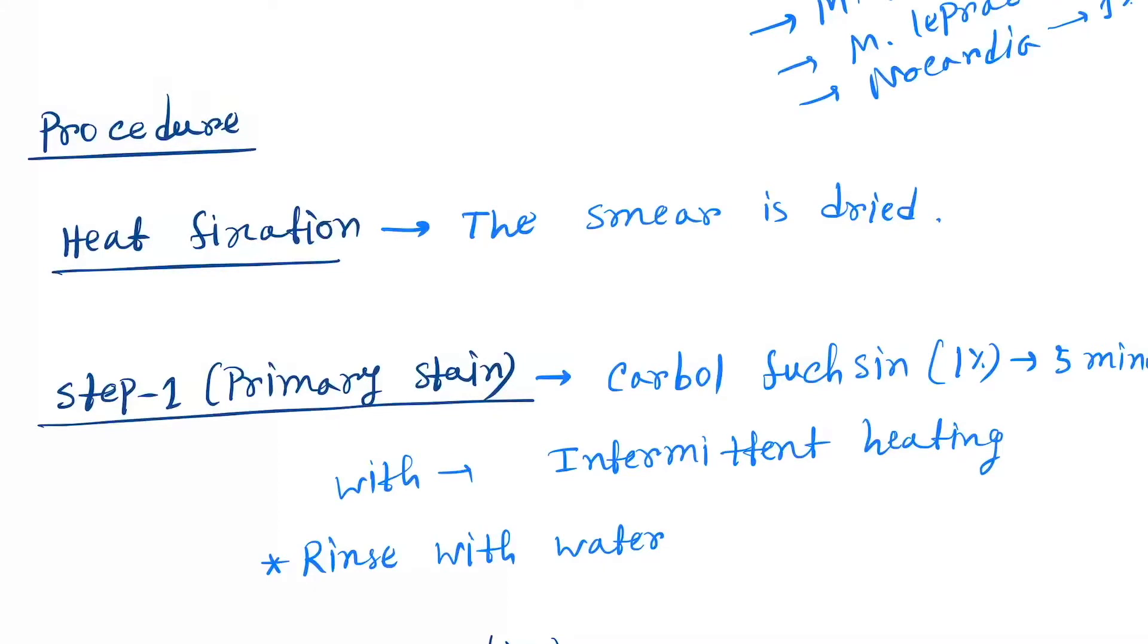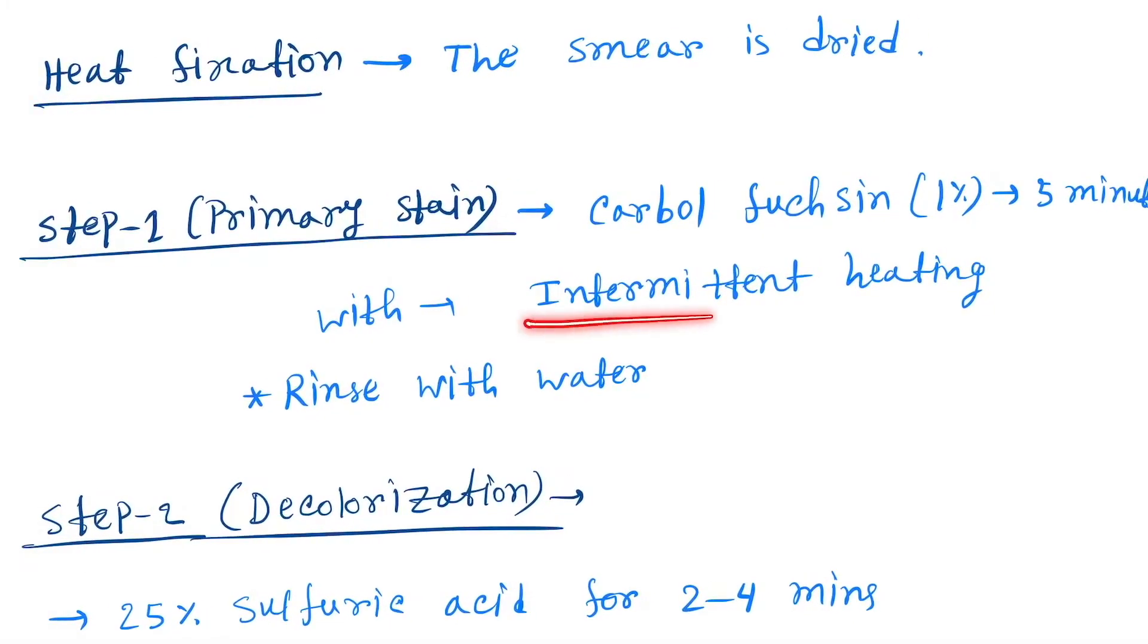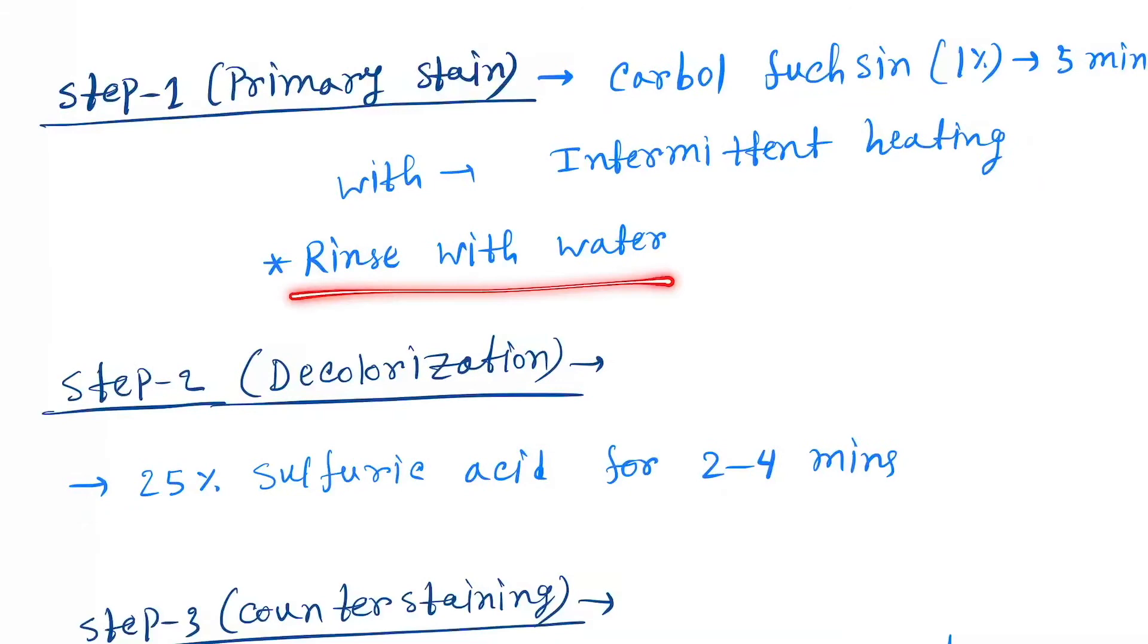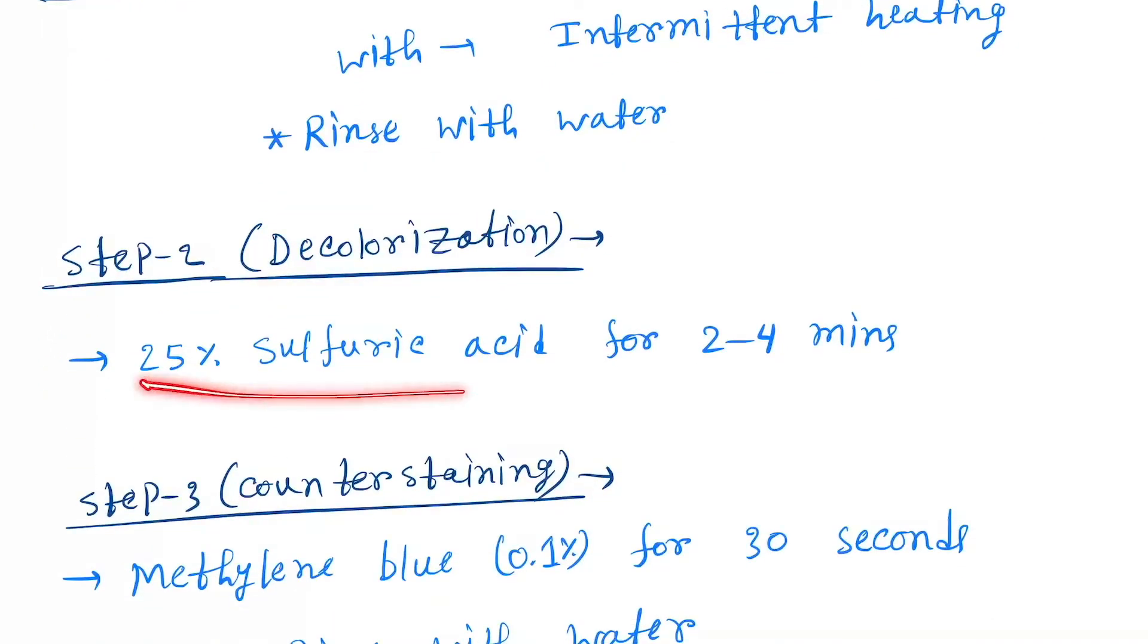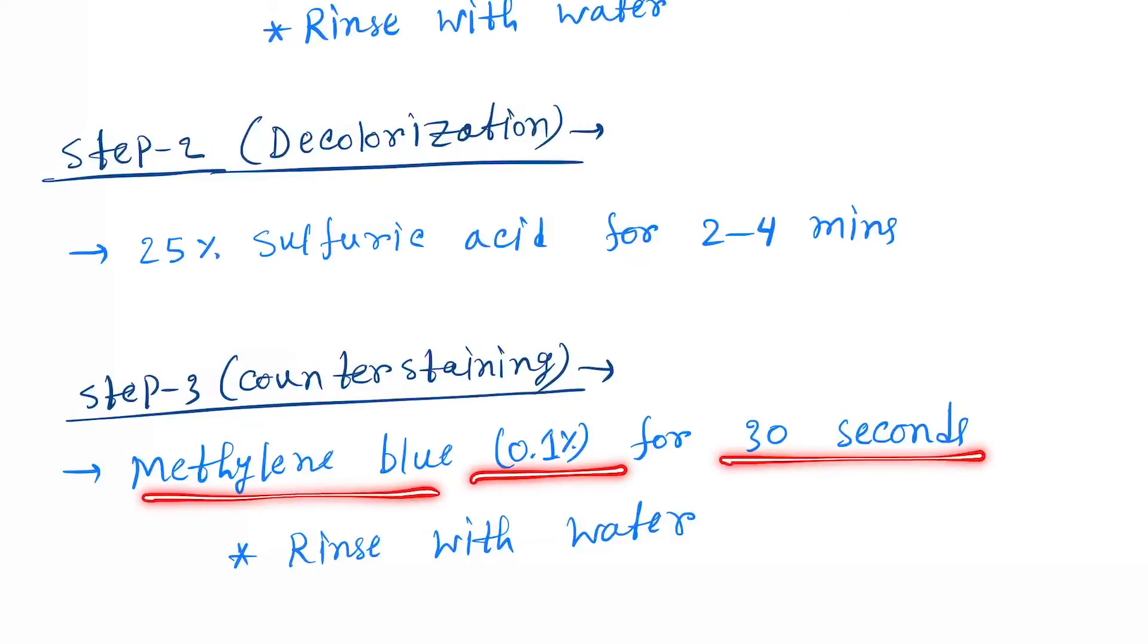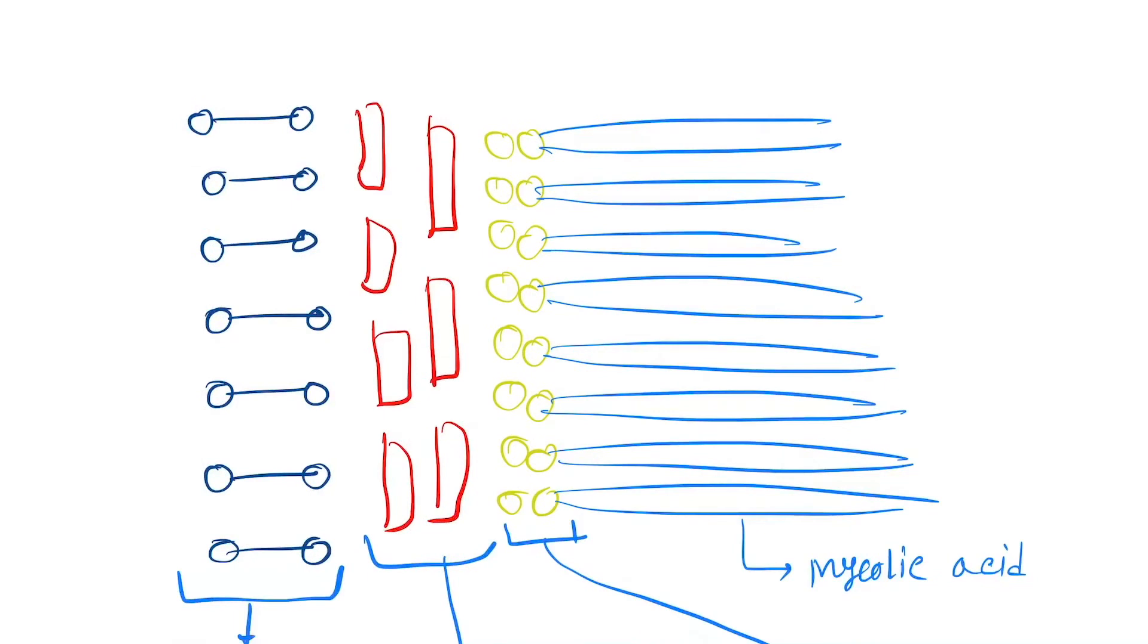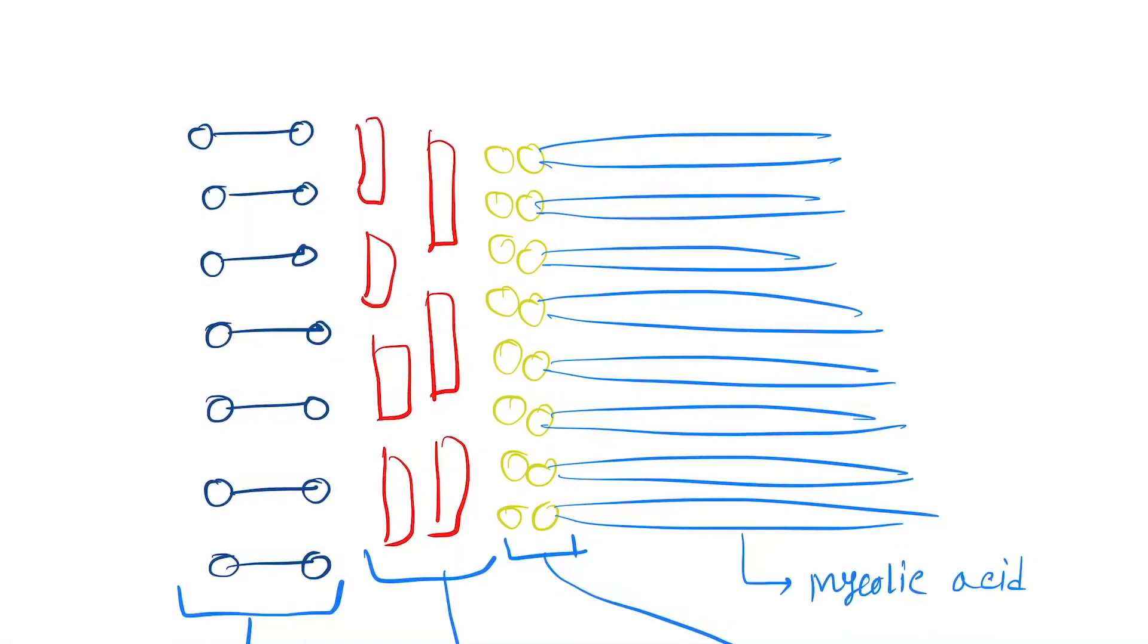Now the procedure. First, heat fixation - the smear is dried. Step 1, primary staining: carbol fuchsin is added with intermittent heating for 5 minutes. Step 2, decolorization: 25% sulfuric acid for 2 to 4 minutes. Step 3, counterstaining: methylene blue 0.1% for 30 seconds.